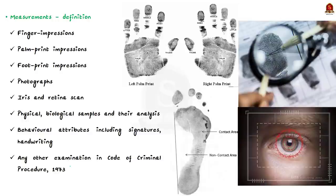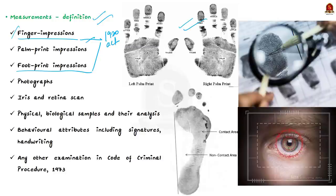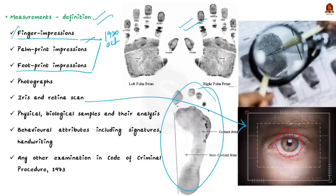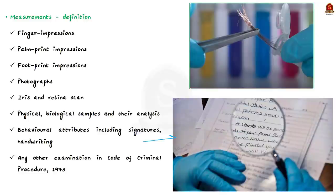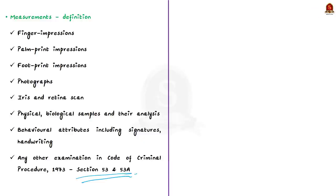There is a major difference between measurements under the 1920 Act and the 2022 Bill. Under the 1920 Act, measurements included only fingerprint and footprint impressions. But measurements under the new bill cover a wide range, including finger impressions, palm print impressions, footprint impressions, photographs, iris and retina scan, physical and biological samples along with their analysis, and behavioral attributes such as signatures and handwriting. It also includes any examination referred to in section 53 or 53A of CRPC.